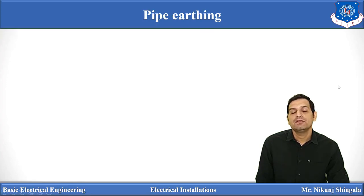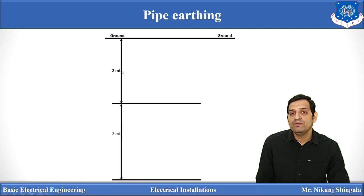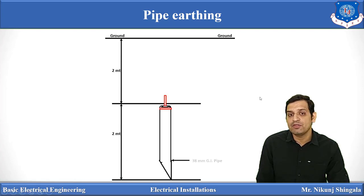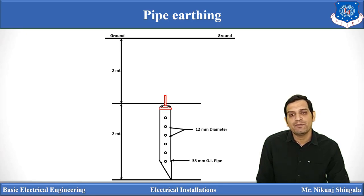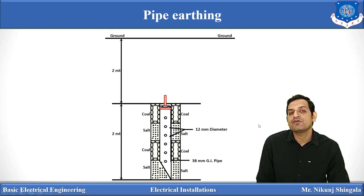For the pipe earthing method, a 4-meter pit is dug below the ground. Below 2 meters from the ground surface, one galvanized iron pipe of 38 mm diameter is used, and that pipe has different holes of 12 mm diameter, basically used for water pouring. Around this galvanized pipe, alternating layers of charcoal and salt — each 15 cm by 15 cm — are placed. The function of these alternating layers is to increase moisture and area around the galvanized pipe so that resistance can be decreased.